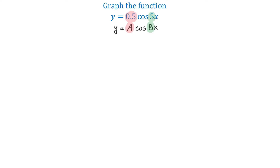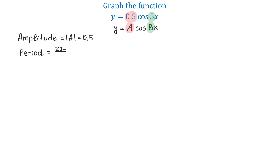To graph the function, first we have to find the amplitude and the period. The amplitude is found by taking the absolute value of a, which in this case is 0.5. The period is found using the formula 2π divided by b. If we replace b with 5, then we get the period of 2π over 5.